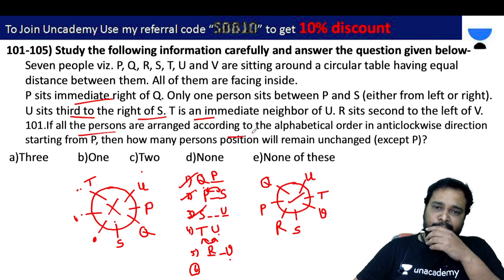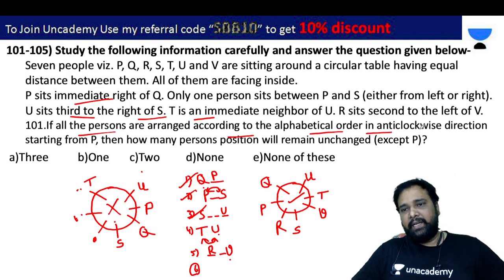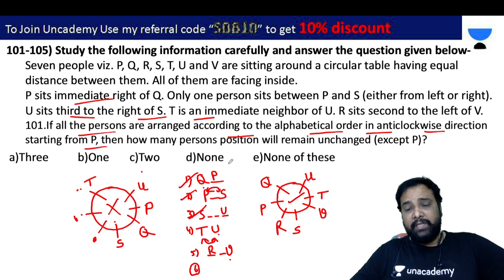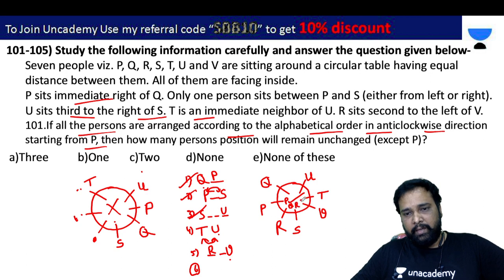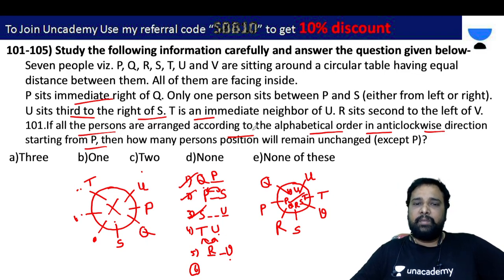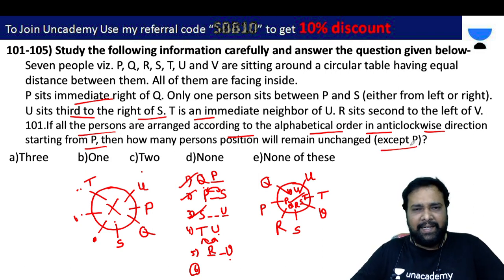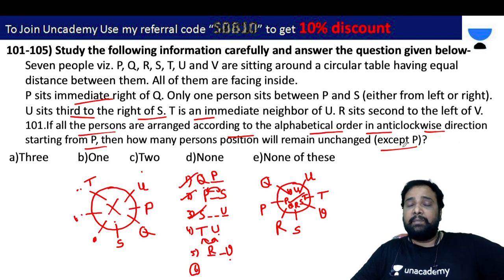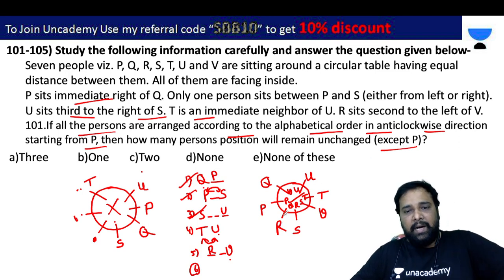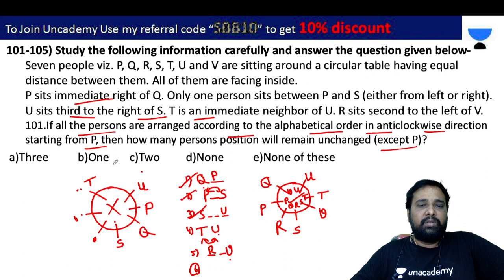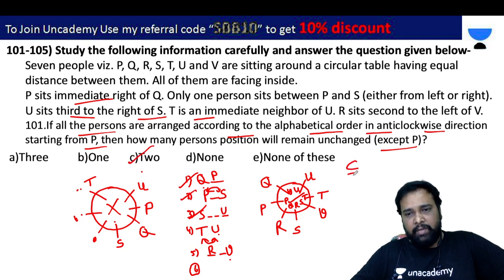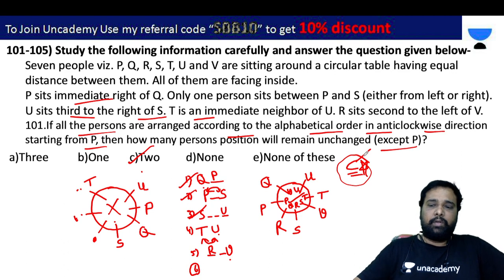If all persons are arranged in alphabetical order in the anticlockwise direction starting from P, then the order is P, Q, R, S, T, U, V going anticlockwise. So the answer is C — option C only is the right answer for problem number 1.